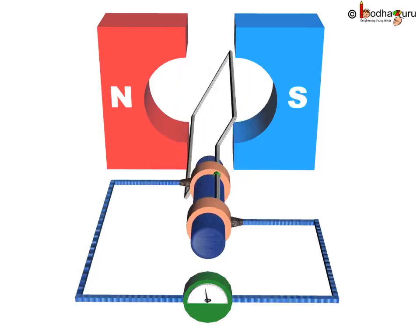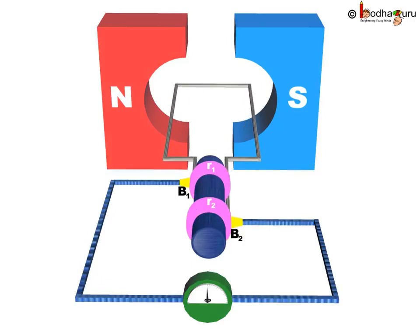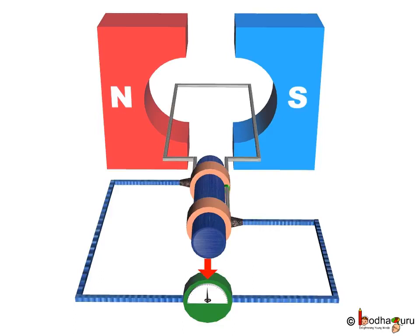To create a path for induced current, the two rings that is R1 and R2 are in contact with two separate brushes which we represent here by B1 and B2. These two conducting stationary brushes B1 and B2 are kept pressed separately on R1 and R2 respectively. To verify the presence of induced current, the outer ends of the two brushes are connected to the galvanometer to show the flow of current in the given external circuit.